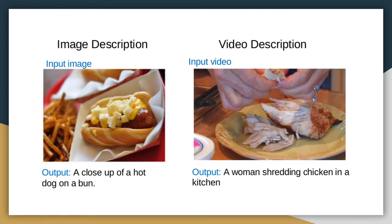As we can see in the two figures — one is an image, the other is a video — image description is still easier as we just have to learn about one frame. Video description is tougher because a video is many frames of images, so we need to remember the previous frames to determine what action is taking place, which should be described by the system.